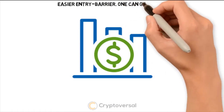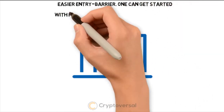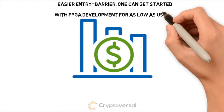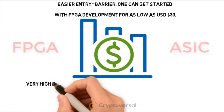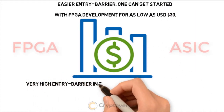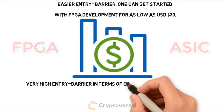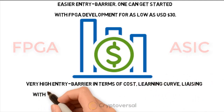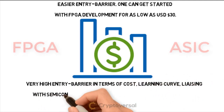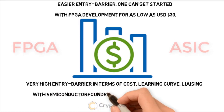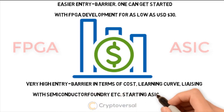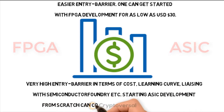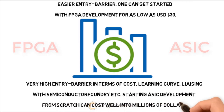FPGA has an easier entry barrier. One can get started with development for as low as $30. ASIC has a very high barrier in terms of cost, learning curve, and the ASIC with Semiconductor Foundry, etc. Starting ASIC development from scratch can cost well into millions of dollars.